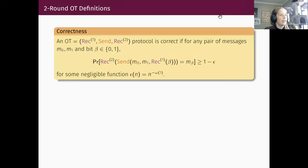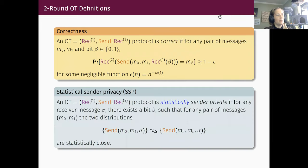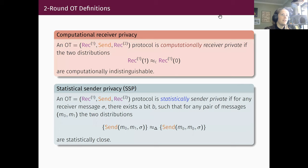An oblivious transfer protocol should satisfy a basic correctness property, which really just says that if an honest receiver and sender engage in the protocol, the receiver should end up with the right message with all but negligible probability. We'll also have security properties for both the sender and the receiver, and perhaps unsurprisingly, given the title of this talk, we'll be interested specifically in achieving statistical privacy for the sender. This means that no matter what the receiver does in the protocol, the output of the sender is statistically close to a distribution that is independent of one of the messages. In other words, that message is statistically hidden. We also want to ensure computational privacy for the receiver, just to ensure that the receiver's bit, the bit that it uses to select M0 or M1, is also hidden.